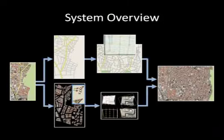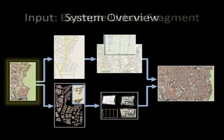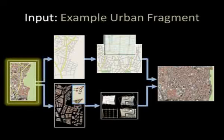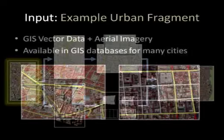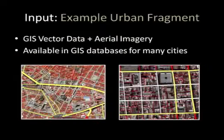We present an overview of our system pipeline. Our input is a set of example urban fragments. An urban fragment consists of vector data and aerial imagery, both of which are available in GIS databases for many cities worldwide.